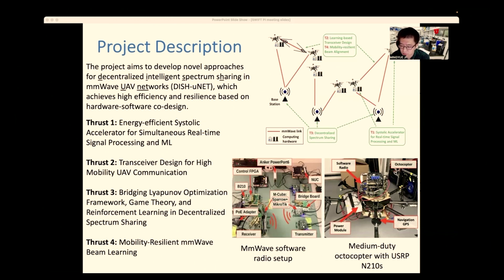The fourth thrust is to design mobility-resilient millimeter wave beam learning. Another important feature of our project is that we will do a realistic implementation and validation of our proposed system. You can see on the two figures on the left-hand side — this is our hardware. We use mmWave for millimeter wave communication. On the right-hand side, this is our UAV — a quadcopter.